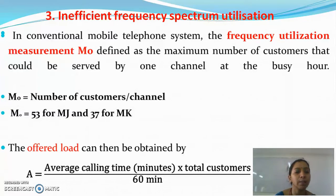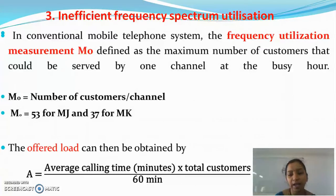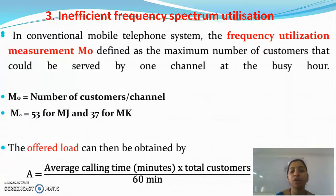For example, M0 equals 53 for the MJ system and 37 for the MK system. The offered load can be obtained by the formula: A = (average calling time in minutes × total customers) / 60 minutes. This is measured in Erlangs, a unit named after the scientist Erlang. The offered load can also be called traffic.